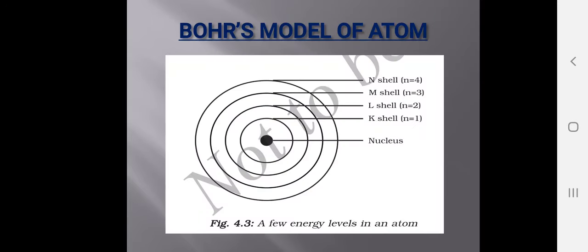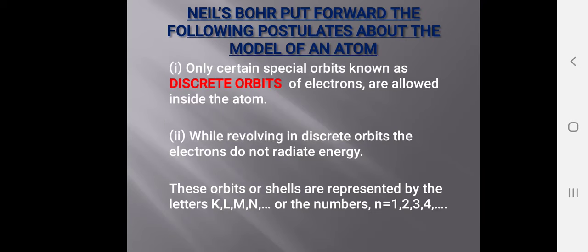The last model of an atom in this chapter is Bohr's model. He said there are certain special orbits inside the atom in which only the electrons revolve. Rutherford only said electrons revolve around the nucleus, but Bohr clearly stated that electrons revolve in special orbits and do not radiate any energy. Bohr's postulates are: only special orbits, known as discrete orbits, are allowed inside the atom, and while revolving in discrete orbits, the electrons do not radiate any energy.